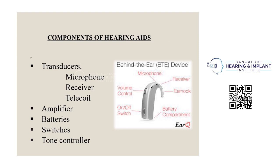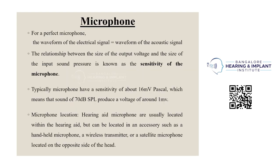Next we go to the components of hearing aids, which include: transducers — microphone, receiver, and telecoil — amplifier, battery, switch, and tone controller. For a perfect microphone, the waveform of the electrical signal is equal to the waveform of the acoustic signal. The relationship between the size of the output voltage and the size of the input sound pressure is known as the sensitivity of the microphone. Typically microphones have a sensitivity of about 16 mV per Pascal.